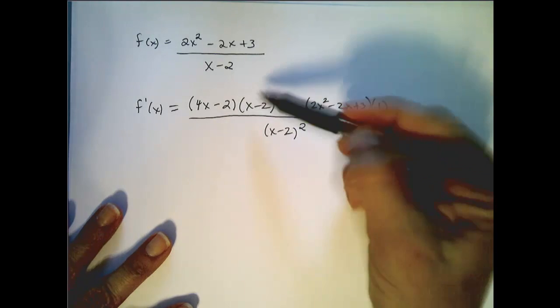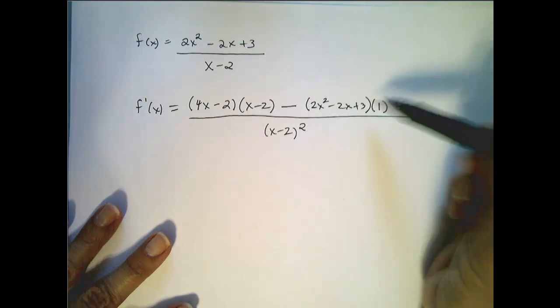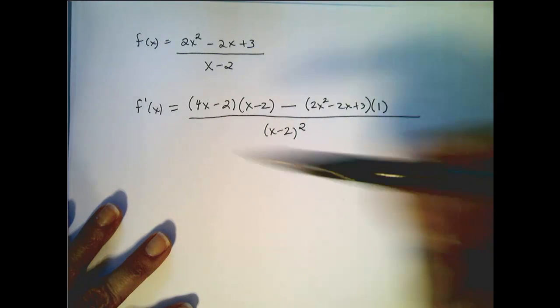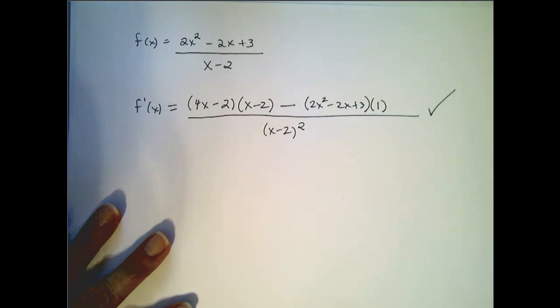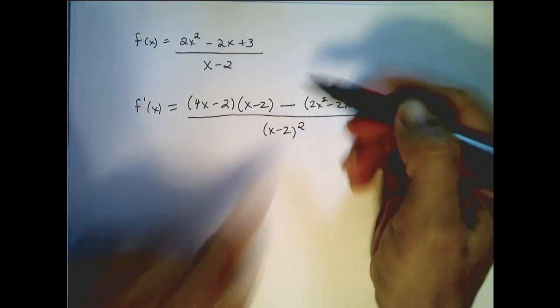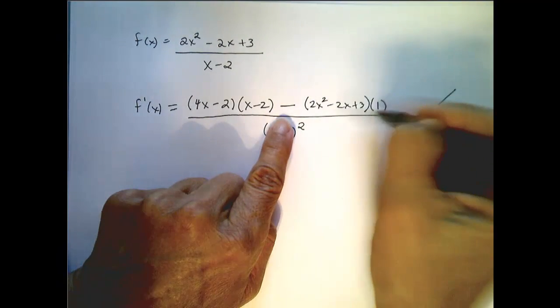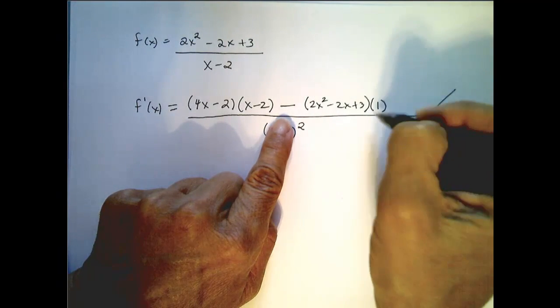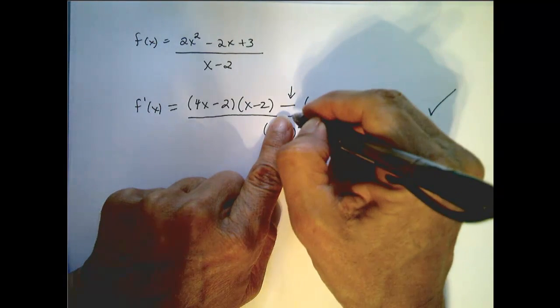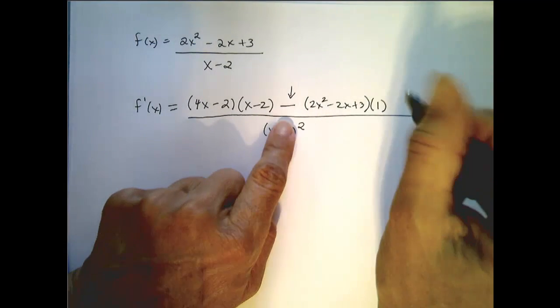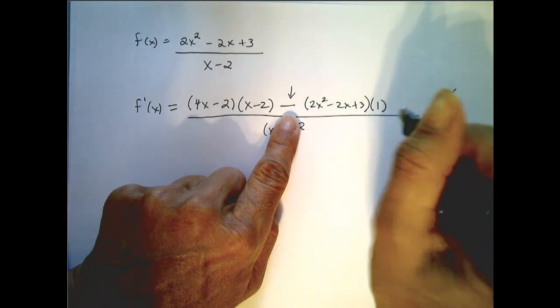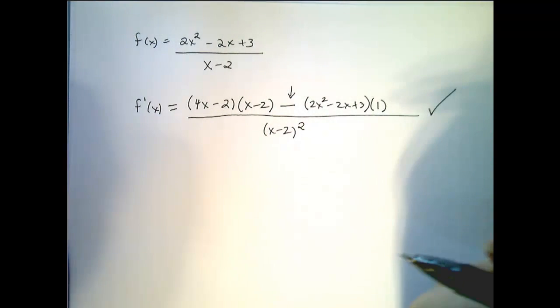You can multiply this out, distribute this negative and combine like terms to further simplify, but this is also a sufficient answer. Be very careful when you're taking derivatives to keep everything in parentheses, because that negative will distribute to everything, and so you need to keep parentheses so you don't only negate the first term.